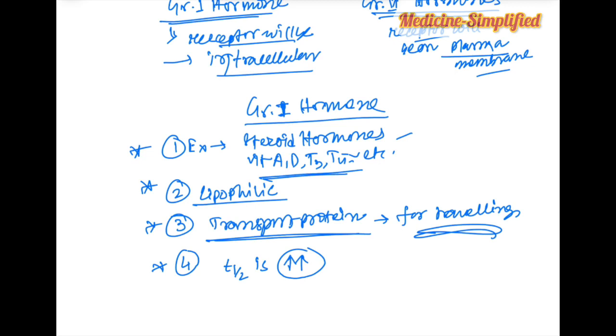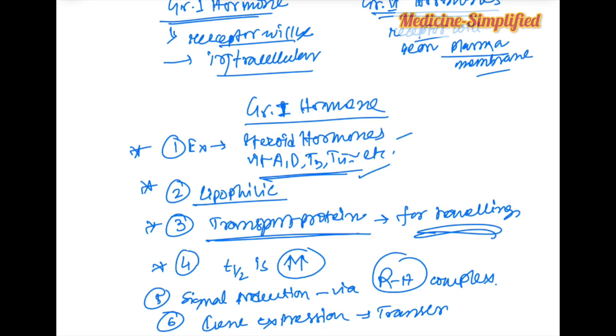So transport protein makes them to act longer. So their T half is high. This is the most important number two. Number five signal production via receptor hormone complex. Number six gene expression via transcription. These are the salient features of group one hormone just go through it.